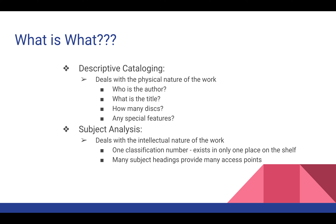When we talk about the subject of an item, we think about the intellectual parts that make up the work. For instance, if the subject was health and we were using the Dewey Decimal System, those items would be classified in the 600s — more specifically 610, Medical Science and Medicine, and further 613, Promotion of Health. This number lives only one place on the shelf in the ILS. The more subject headings we have, the more points of access there are. Many subject headings provide many points of access, and many points of access make things much more findable.